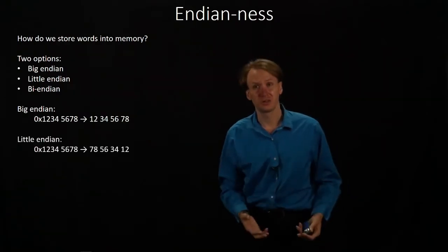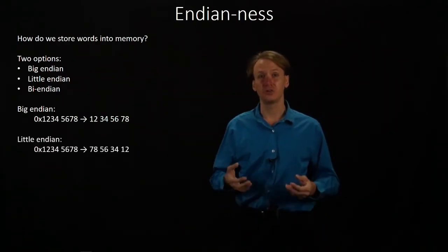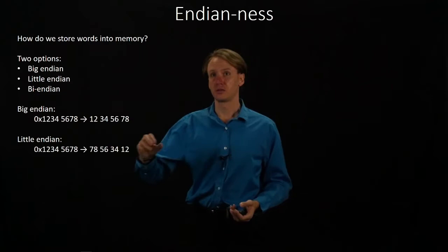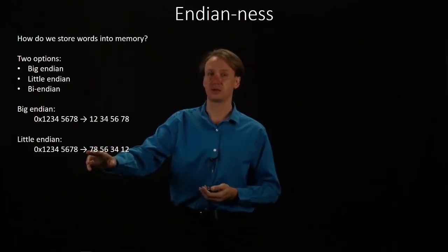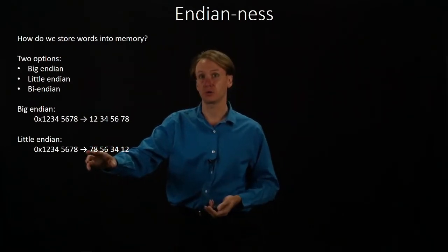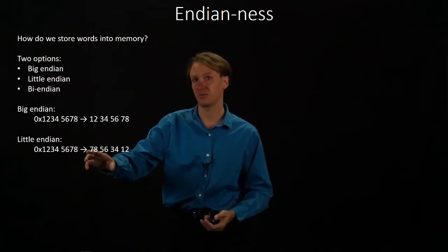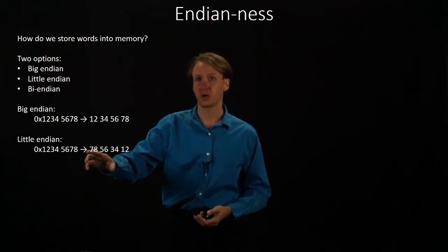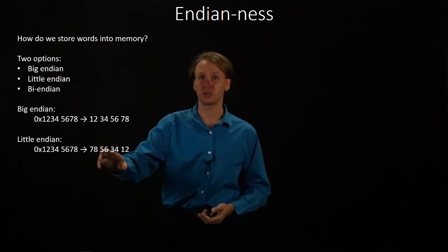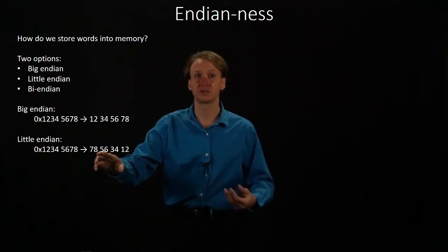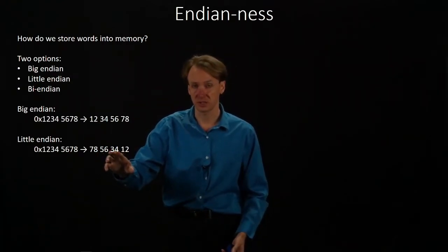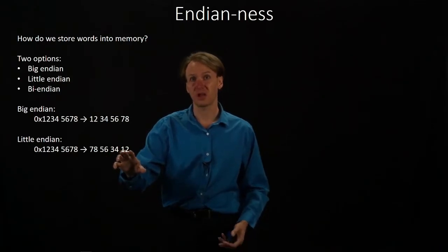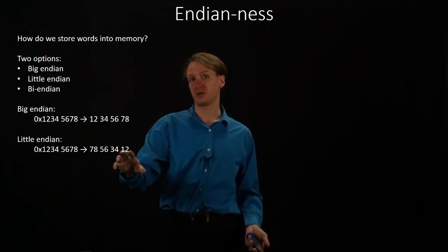But in a Little Endian system, I do the opposite. The address points to the little end of my number, so I put in the least significant byte at the address. When I go to address plus one, I put in the second least significant byte, then the third least significant byte, and finally I put in the most significant byte.